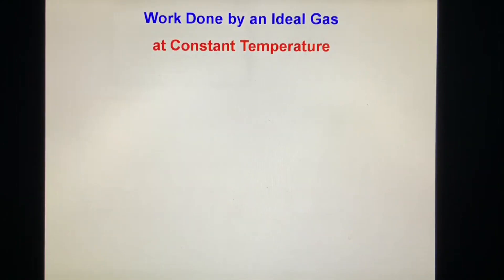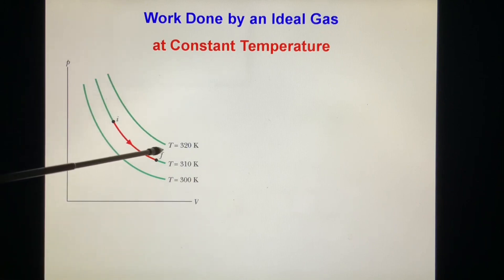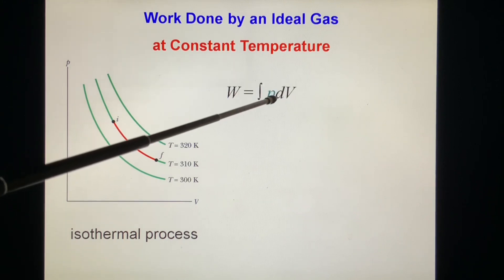Work done by an ideal gas at constant temperature. Remember, this is the condition: at constant temperature. We look at this PV diagram. We have three lines, they are isothermal lines. When all these PV satisfy, the temperature is constant. This is 320 K, 310 K. In the initial state I along this isotherm curve to F, this process we call constant temperature. This process we call isothermal process.